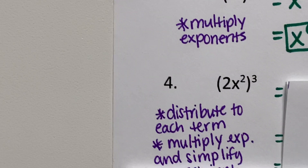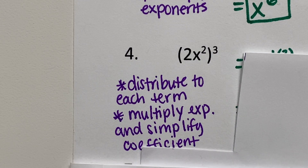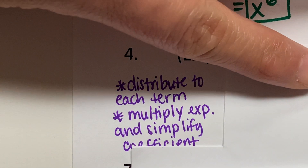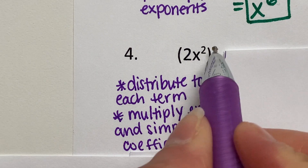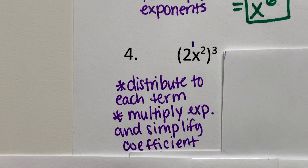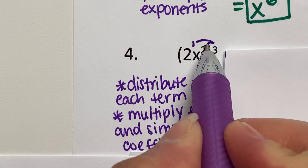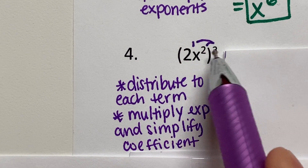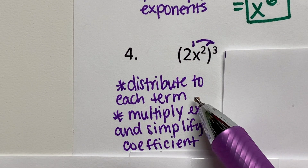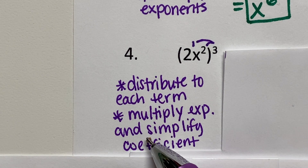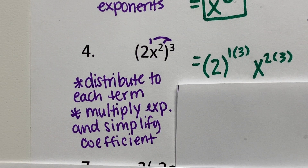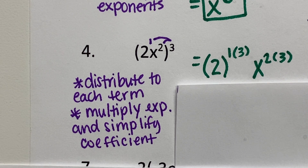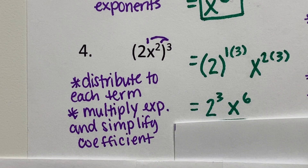In example number four, we have 2x squared, and all of this is inside the parentheses raised to the third power. You want to recognize that you have a coefficient. We have to recognize that two has an exponent of one, and we're going to distribute this exponent to each term. So three times the exponent one — not three times two — and three times the exponent two. So we have two to the exponent one times three, and x to the exponent two times three. This simplifies to two to the third power and x to the sixth power.